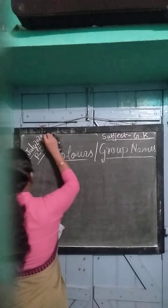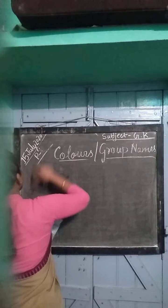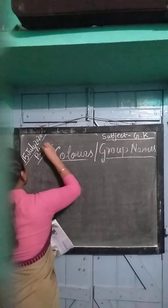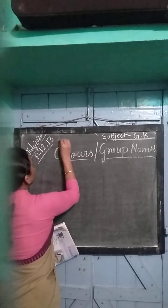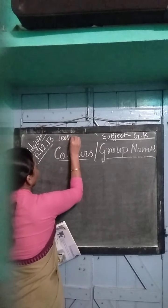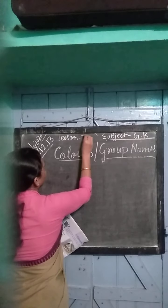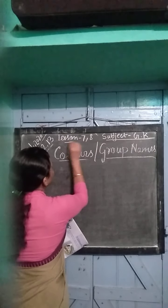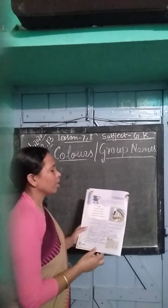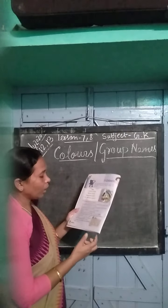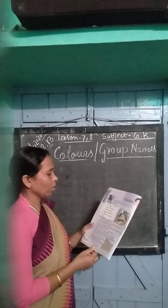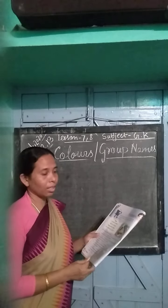Page number 12, lesson 7. Page number 12 — you take out colors. We will learn today colors names.